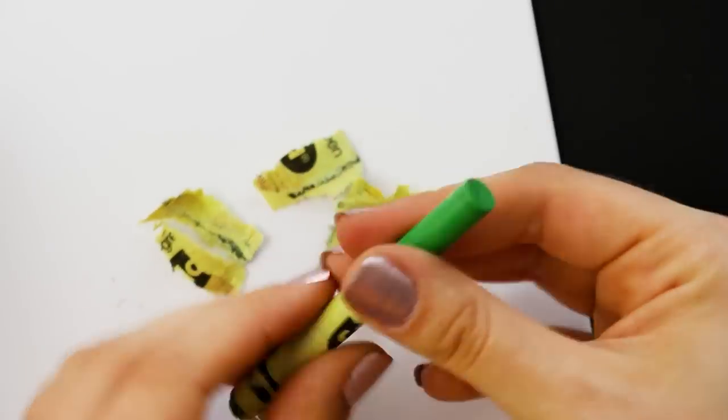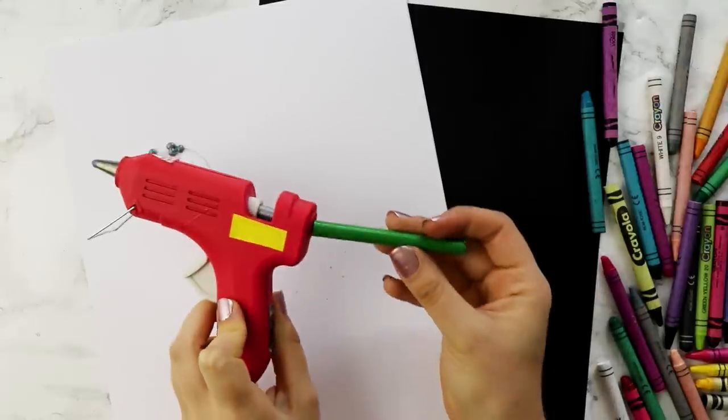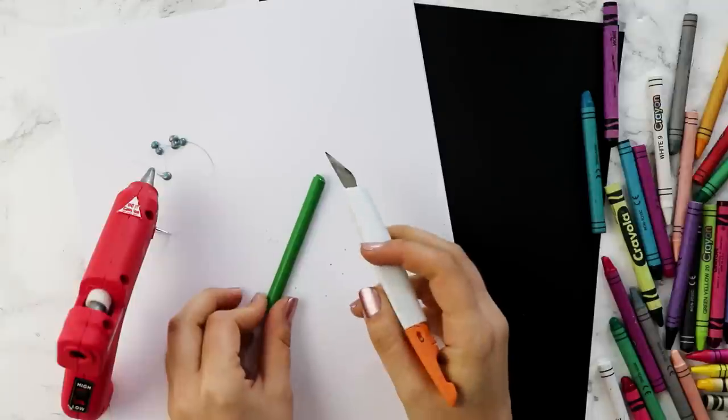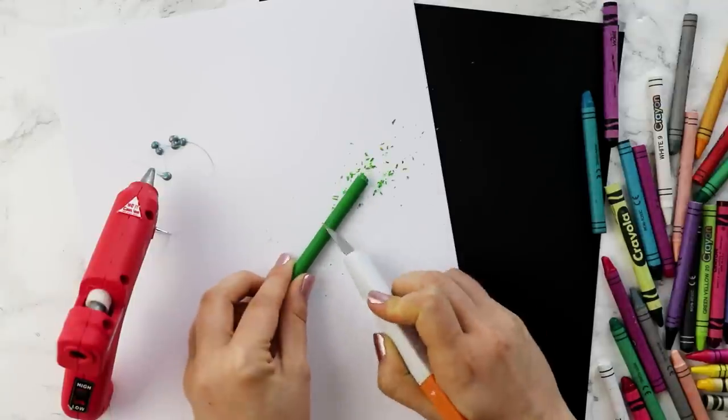Obviously you'll want to remove the paper from the crayon, but it turns out Crayola crayons are a little too big to fit into the hot glue gun. So I grabbed my craft knife to shave down the sides.